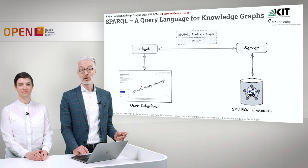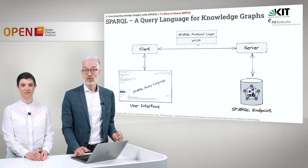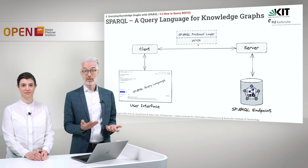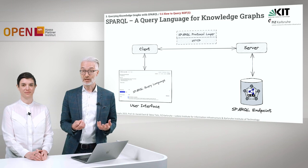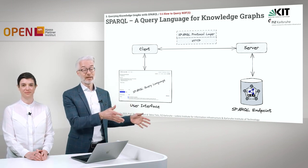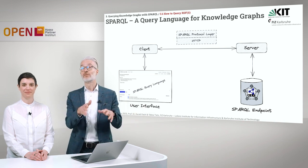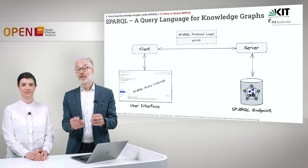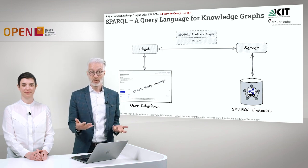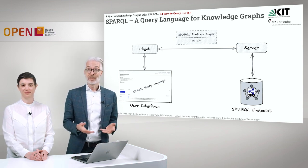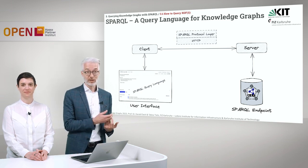The web client usually runs on a browser. On top of the HTTP transport protocol, there is the SPARQL protocol. Your SPARQL query will simply be transported via HTTP from your client — that's your user interface in the browser — to the server, then to a SPARQL endpoint, which is a triple store where RDF triples are stored. There your SPARQL query is carried out and the result is transported back.